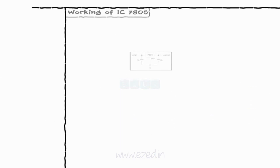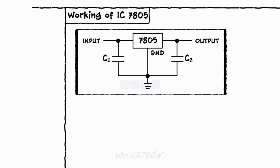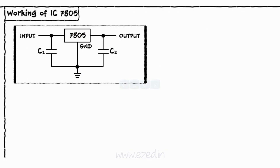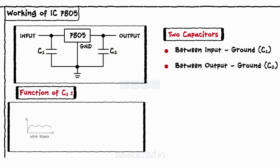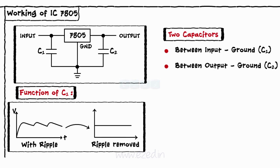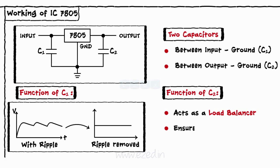Let's learn about the working of IC7805 now. It is implemented in a circuit as shown. We have two capacitors connected to IC7805: one between the input and ground terminal and second between the output and ground terminal. The first capacitor takes out any ripple coming out from the transformer so that IC7805 receives a smooth input voltage. The second capacitor acts as a load balancer to ensure consistent output from 7805 as plus 5 volts.